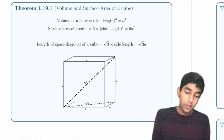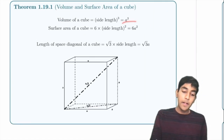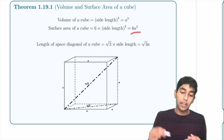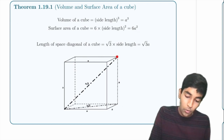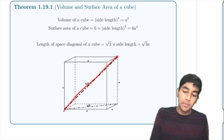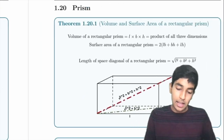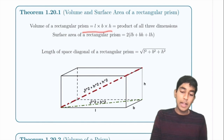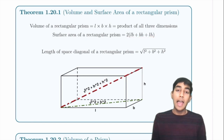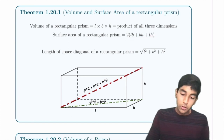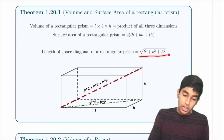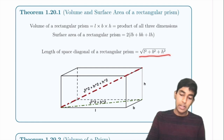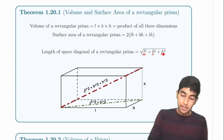A cube has volume = s³, surface area = 6s², and space diagonal = √3 × s. A rectangular prism has volume = L × W × H, surface area = 2(LW + WH + LH), and space diagonal = √(L² + W² + H²), found by applying the Pythagorean theorem twice.